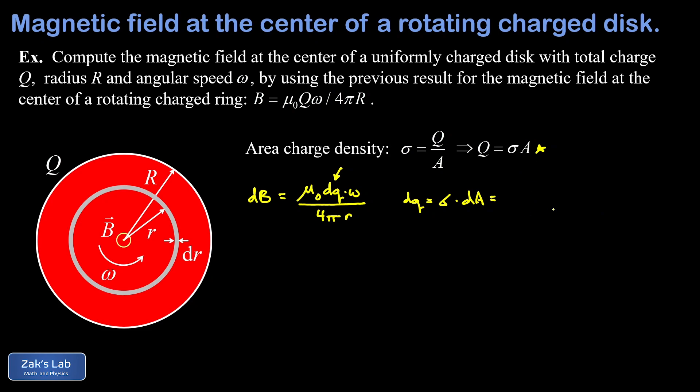Now to get the area captured by that thin ring, we simply slice and unroll it and compute its area as a rectangle. If we unroll that thing, we get a length of 2 pi r, in other words, the circumference of the ring. And then we have a thickness of dr. So dq can be replaced by sigma times 2 pi r dr.